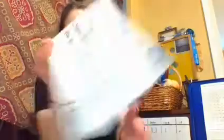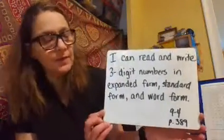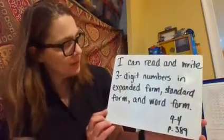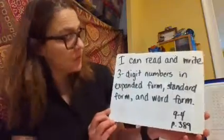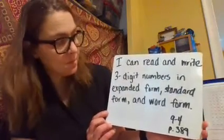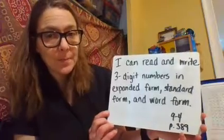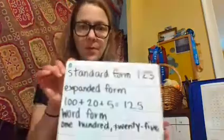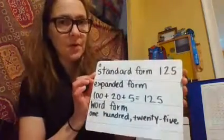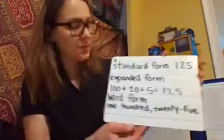Okay, let's go to page 389. The I can statement is: I can read and write three-digit numbers in expanded form, standard form, and word form. What you need to remember is standard form means the number — the three-digit number — and you already have a lot of practice with that.